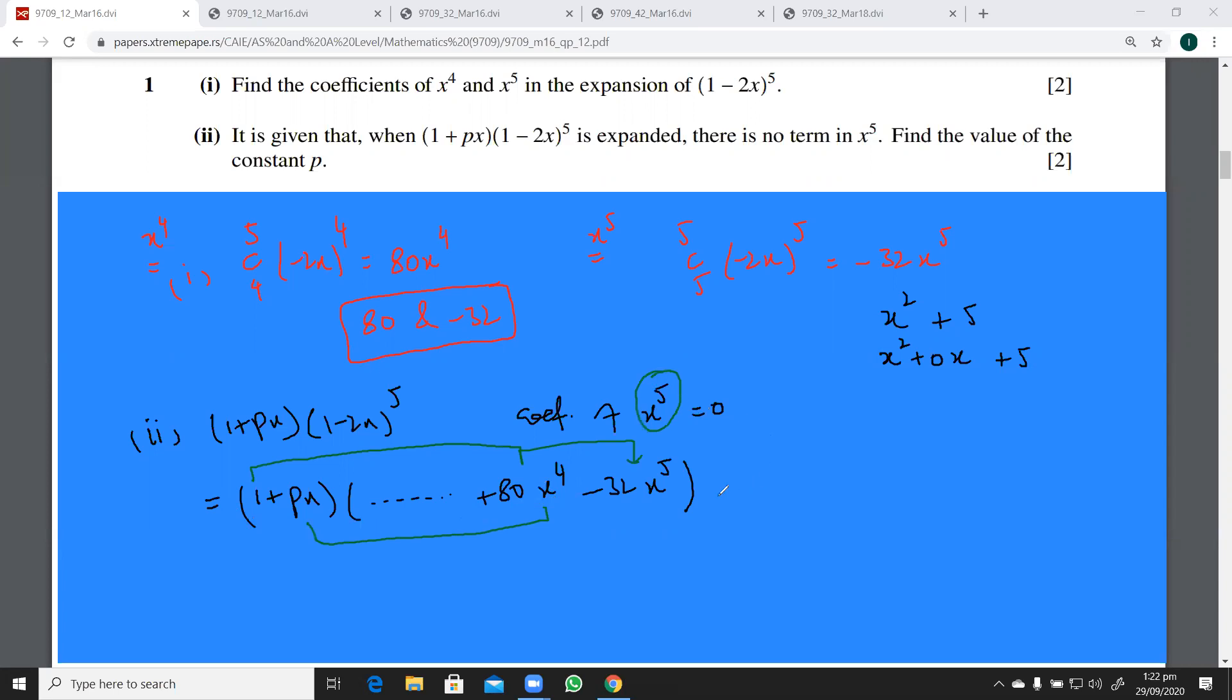x⁵ term. So I'll write it like this: this is -32x⁵ and then plus 80px⁵. So this is going to give me